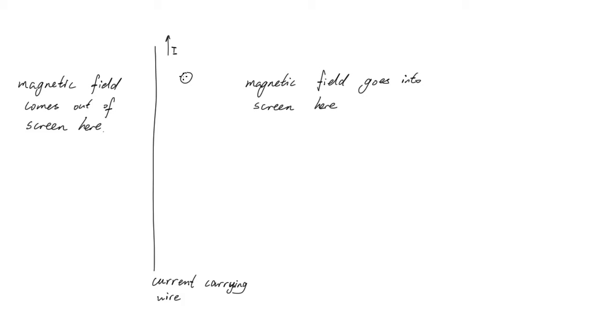How we draw this is by using crosses to indicate that the magnetic field goes into the screen. This can be thought of as an arrow going away from you. And dots to indicate a magnetic field coming out of the screen, an arrow going towards you.